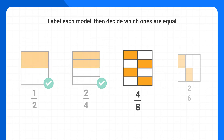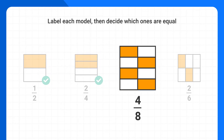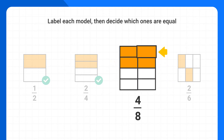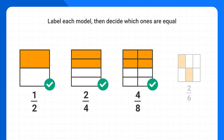We can do a similar thing with this next model. If you imagine moving this piece up here and this piece up here, you can see that this shape actually has the same amount shaded as well. Four-eighths is equal to two-fourths, which is equal to one-half.